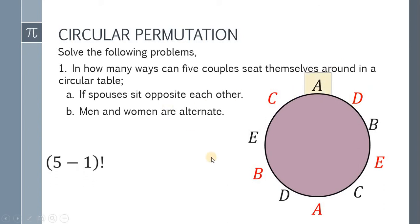We have five minus one factorial different ways. And then, meron tayong limang space para dun sa ating five women. Therefore, meron silang five factorial ways para i-arrange yung mga sarili nila. Simplify, and we get 2,880 different ways kung saan yung men and women are alternate. And we're done.